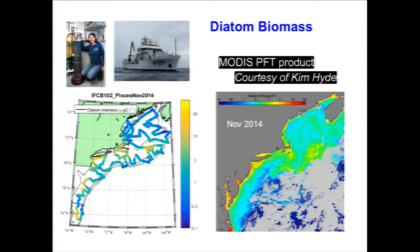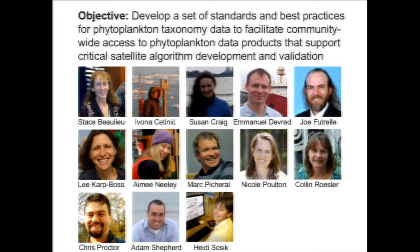The left panel shows diatom carbon from 0.1 to 30 micrograms of carbon per liter. Not only do you get this high spatial resolution that you don't necessarily get from a time series station, you can also use this information for validation. Getting this high spatial resolution along with temporal resolution of these data is critical for our model development and validation.